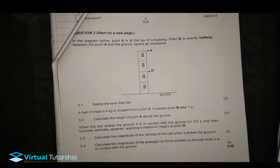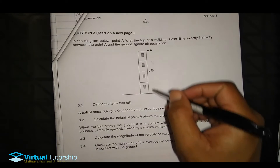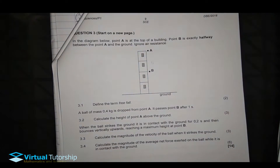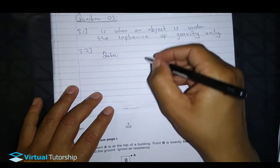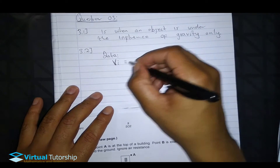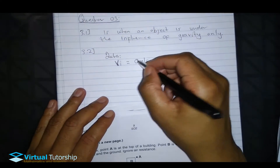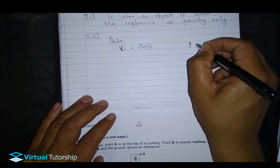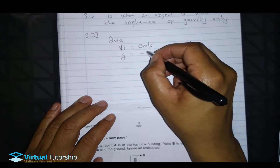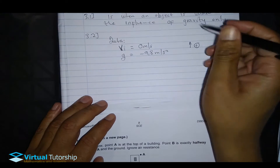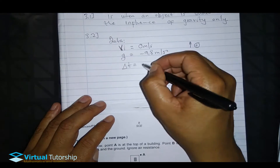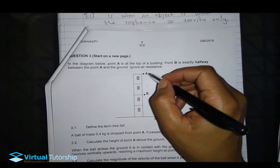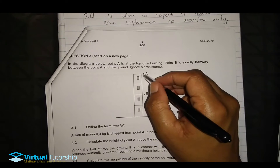We need to calculate the height of point A above the ground. Data: initial velocity = 0 m/s because it's a free fall drop. Choosing up as positive, g = -9.8 m/s² because gravity always acts downward. Delta t = 1 second, which is the time for the ball to move from A to B.